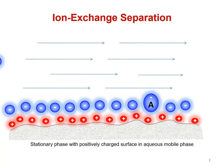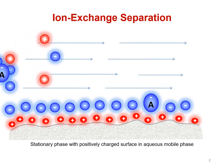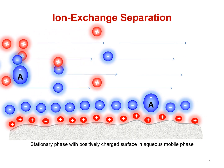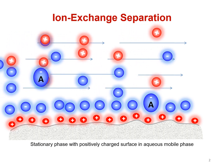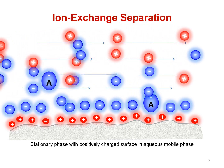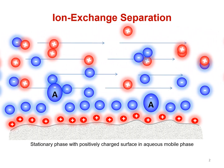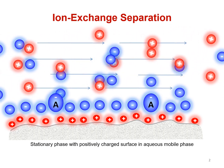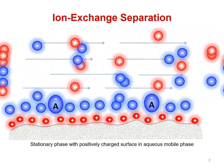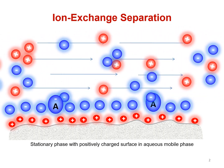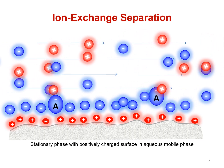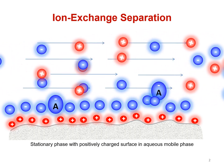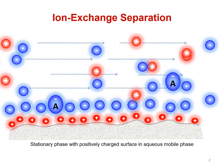Before we get to the mechanisms that drive BIST, let's take a look at classical ion exchange separation. Understanding IE separation will give us a framework that we can build on in order to understand BIST. IE separation is based on the electrostatic interaction of mobile ions of one polarity with the charged stationary surface of the opposite polarity — to put it more simply, opposite charges attract.